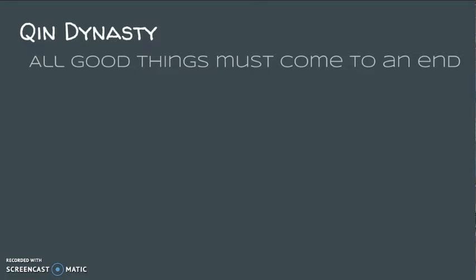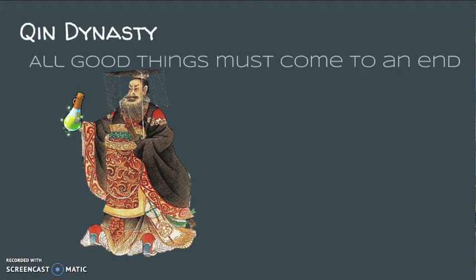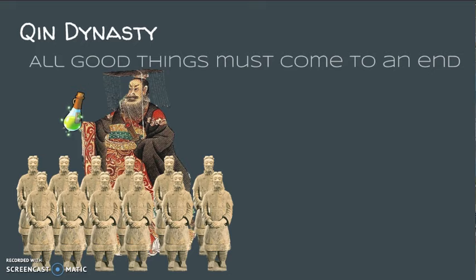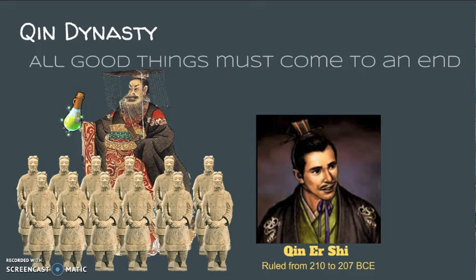Much like every dynasty, this one came to an end too — just 9,985 years short of his prediction. Some say the emperor died while looking for a magic potion so that he could live forever. Some say he was poisoned soon after his death. He was buried with his terracotta warriors, who would protect him in his afterlife. His son would take over after his death, but some historians say he was convinced to kill himself because of the bad job he was doing.